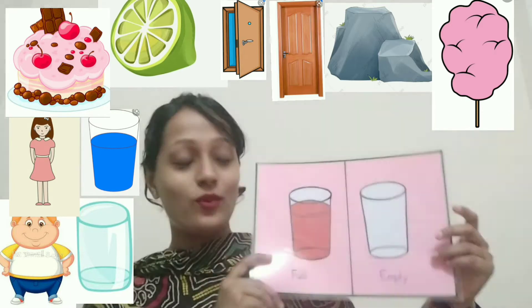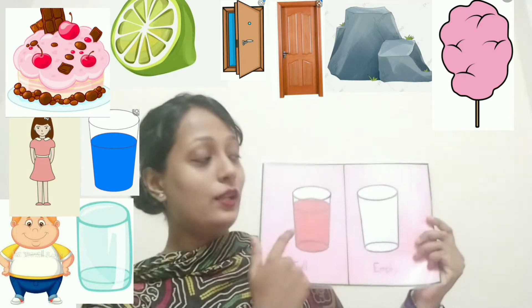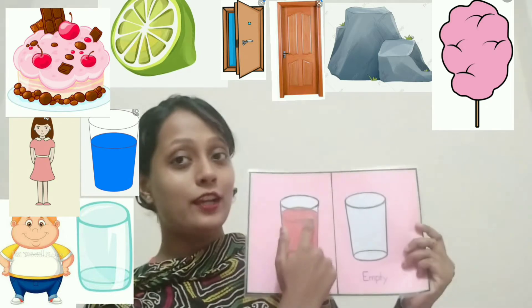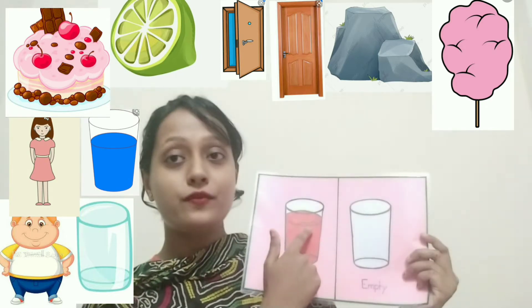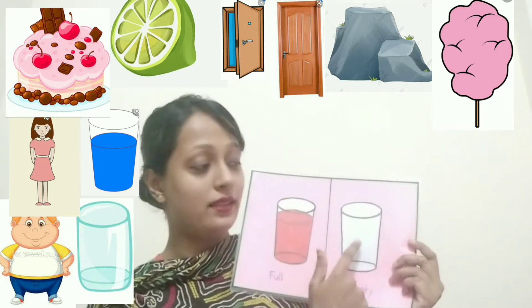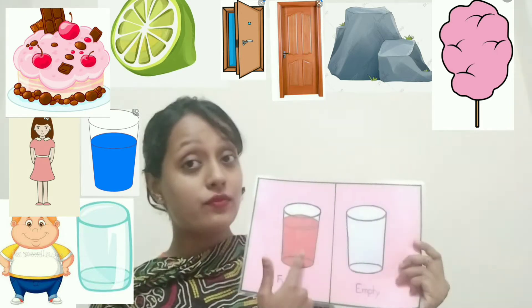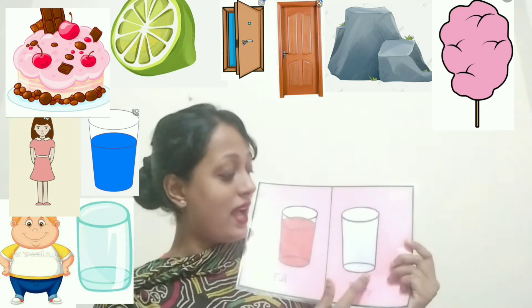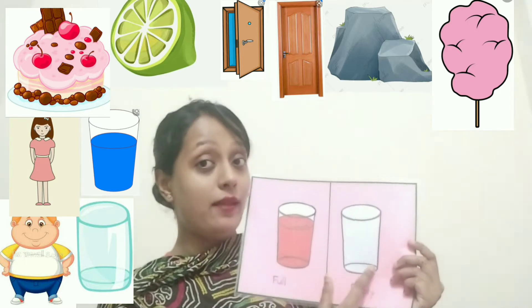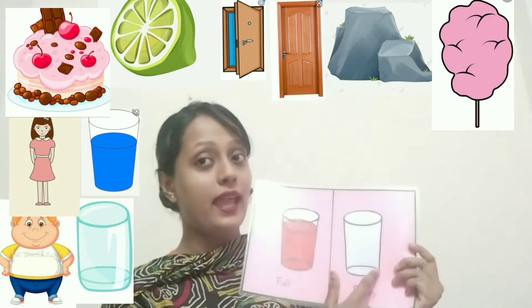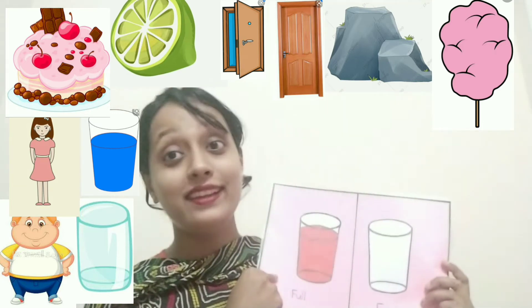Now class, tell me, what's this? Look, there are two glasses. The first glass is full of water and the second glass is empty — there is no water. So this is full and this is empty. The opposite word of full is empty, and the opposite word of empty is full. Very good.